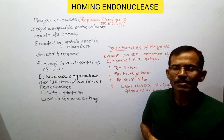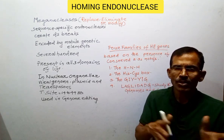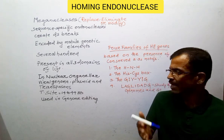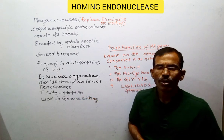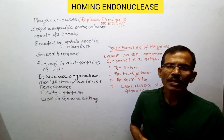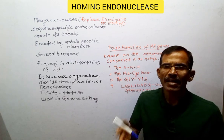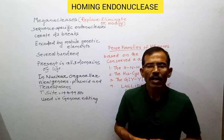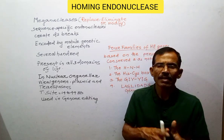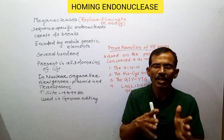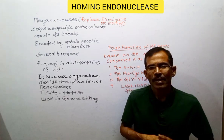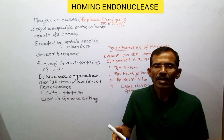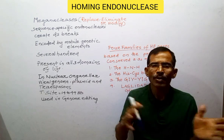These enzymes are characterized by very large recognition sites which are double-stranded DNA sequences having 14 to 44 base pairs. Unlike restriction enzymes which provide defense to bacteria against invading DNAs, meganucleases facilitate the lateral mobility of genetic elements within an organism. This process is called homing. Because of this, meganucleases are also called homing endonucleases.